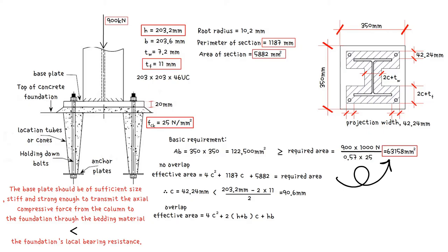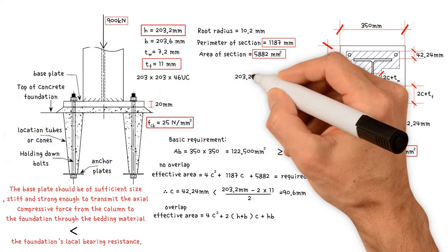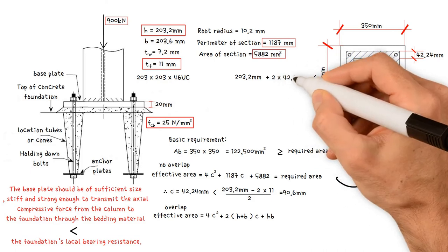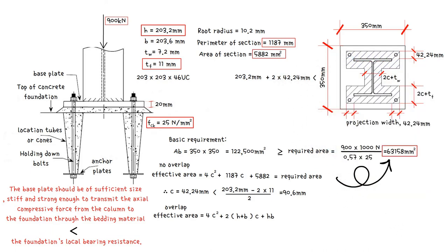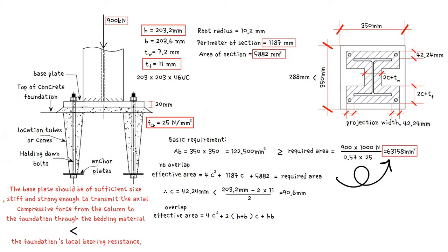Now we should check the length and width of the baseplate. Length of the baseplate 350 millimeters should be greater than the column depth 203.2 millimeters plus 2 times C, 42.24 millimeters. This gives us a value of 288 millimeters. Therefore, the baseplate length is satisfactory.